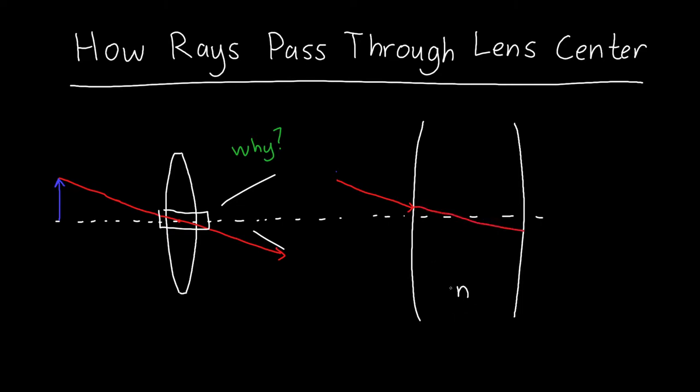And I'm assuming that the lens is made out of a material that's of greater refractive index than the surrounding material. So the ray will look something like this. And if we've drawn things correctly it should pass right through the center of the lens.